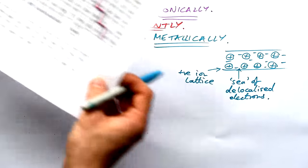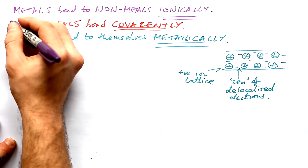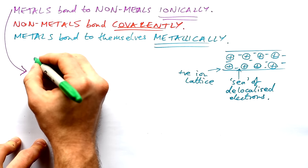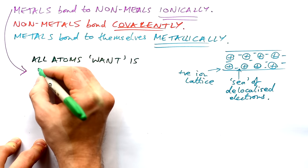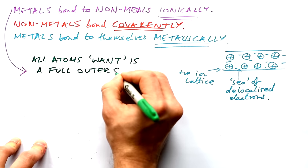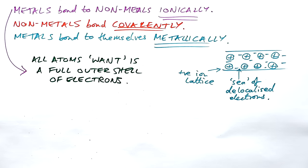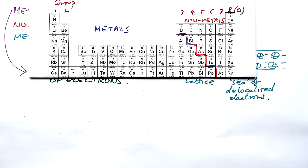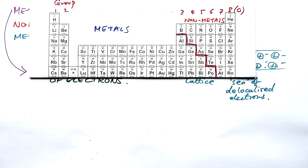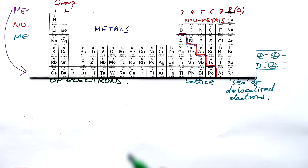Moving on to the good stuff: let's talk about ionic bonding first, because I think it's slightly easier than covalent bonding. Something you need to remember at all times is that all atoms want a full outer shell of electrons, and that goes for both ionic and covalent bonding, but they achieve it by different means. The group — that is the column on the periodic table — tells you how many electrons an atom has in its outer shell.